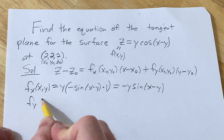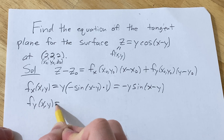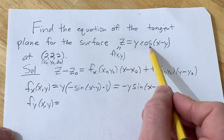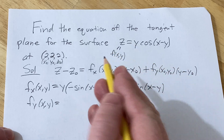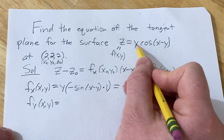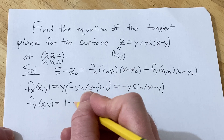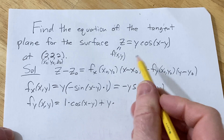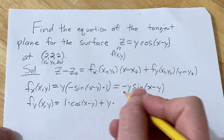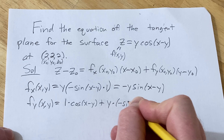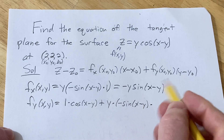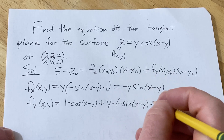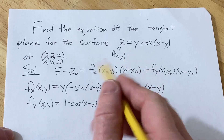Now we're going to find the partial with respect to y. In this case, we're actually going to have to use a product rule, because we have a product — we have a y here and a y inside the cosine. The product rule says you take the derivative of the first, which is 1, times the second, plus the first times the derivative of the second factor. The derivative of cosine is negative sine, so it's negative sine of x minus y times the derivative of the inside function, which is negative 1.